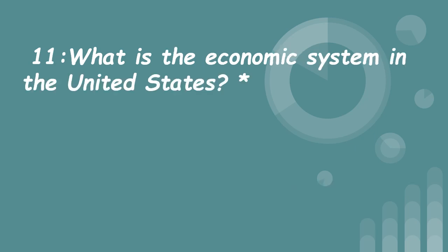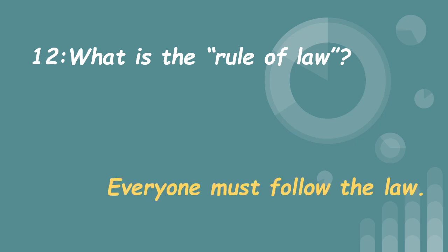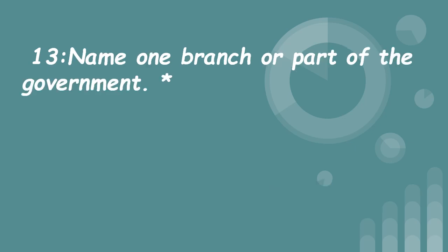11. What is the economic system in the United States? Capitalist economy. 12. What is the rule of law? Everyone must follow the law.